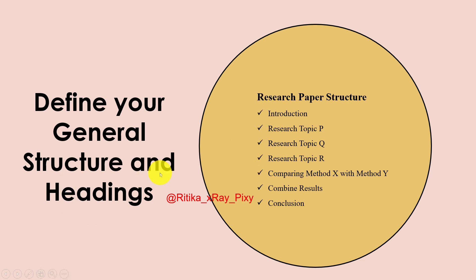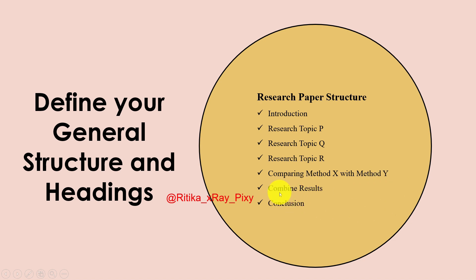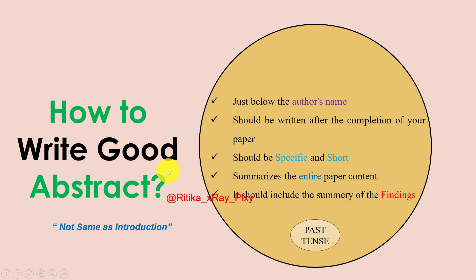When writing a research paper, first make a rough structure. This includes what you will write in the introduction section, how you will describe each topic, how you will compare method X with method Y, and how you will combine the results.